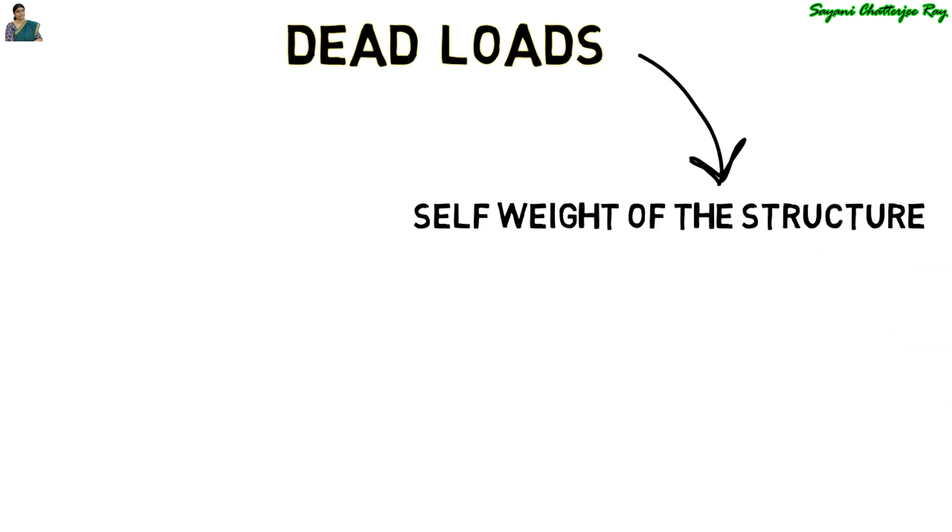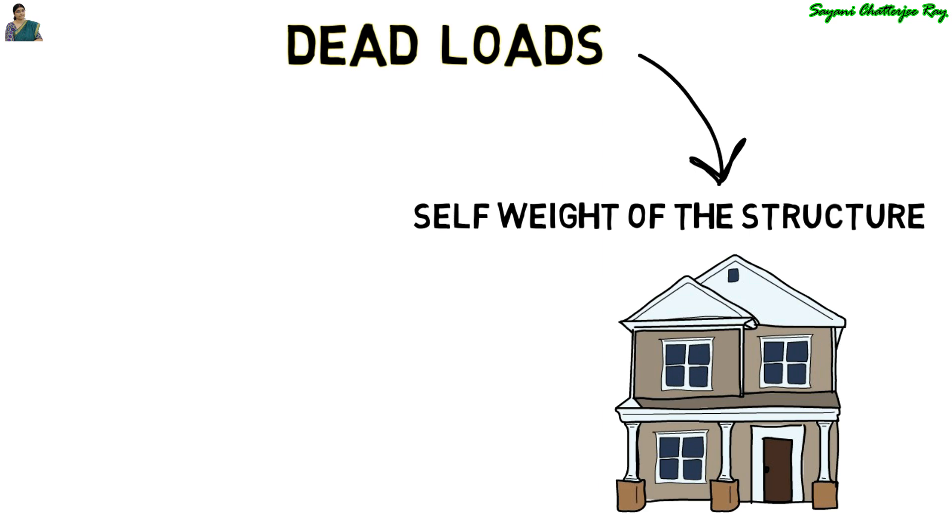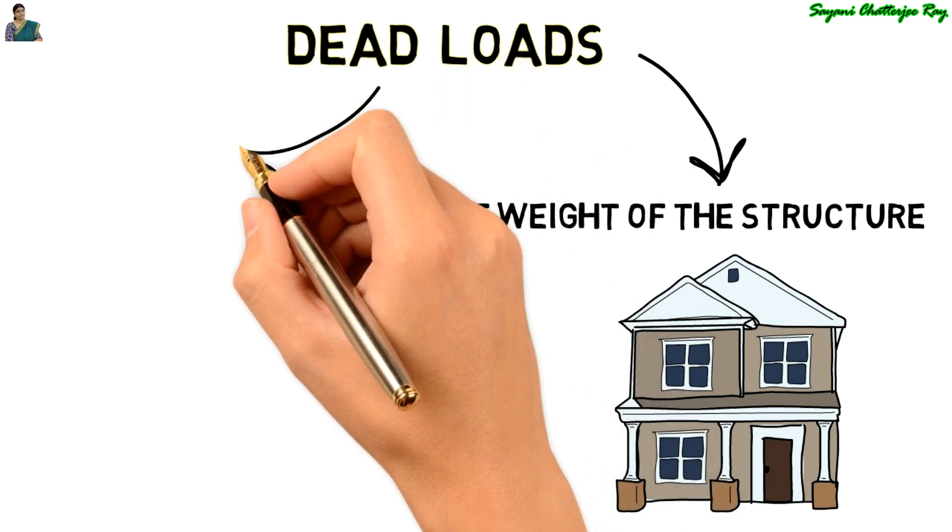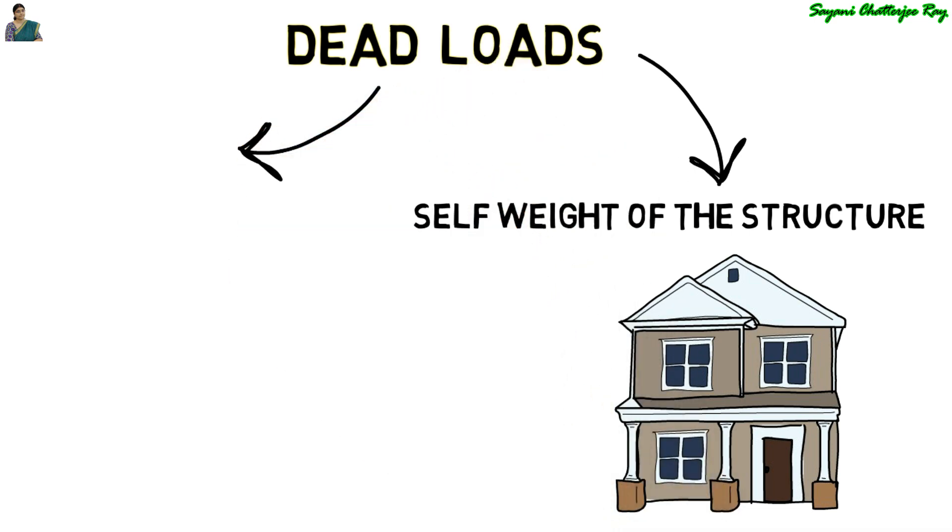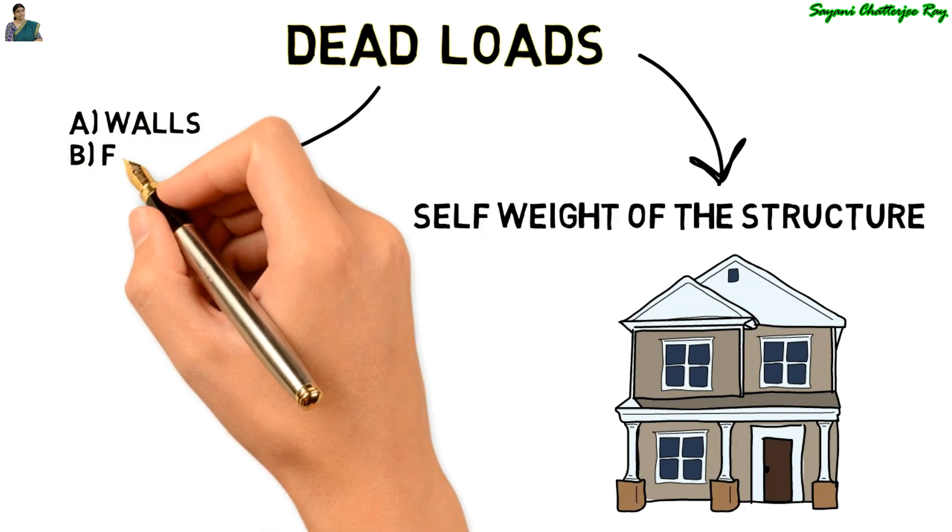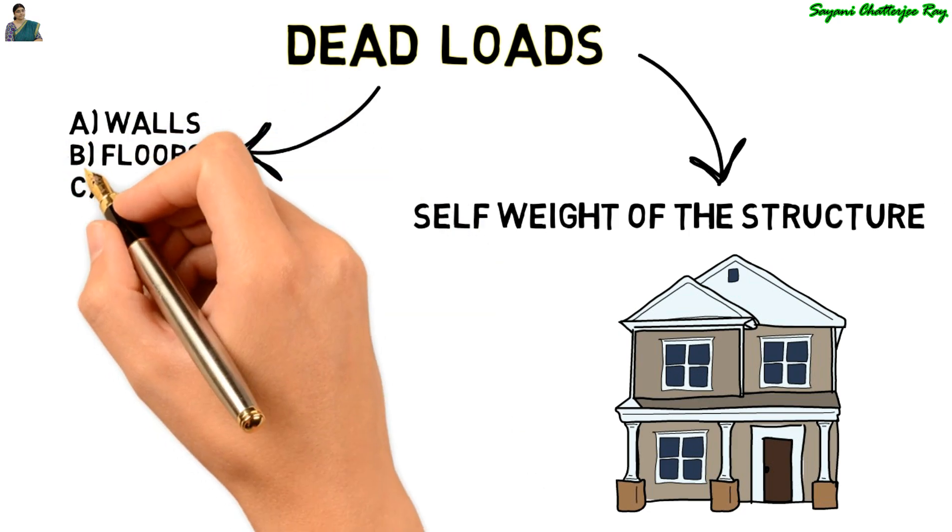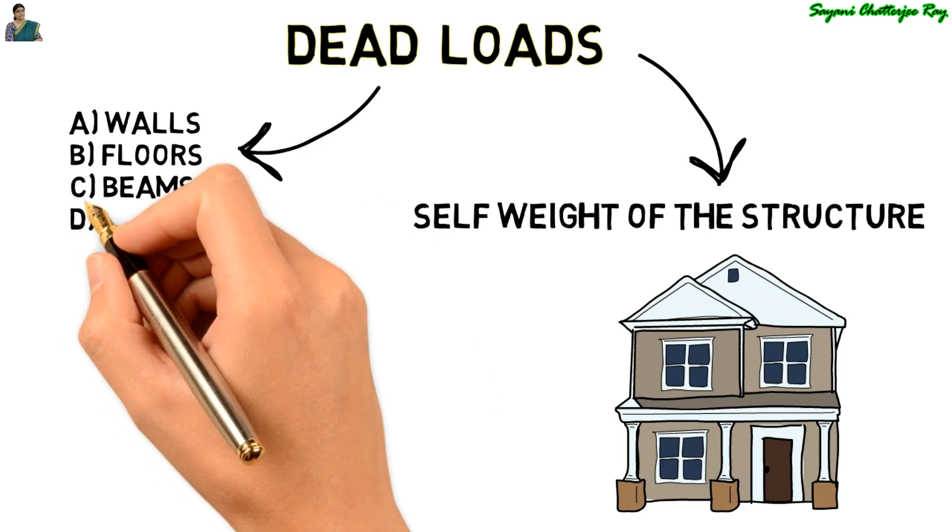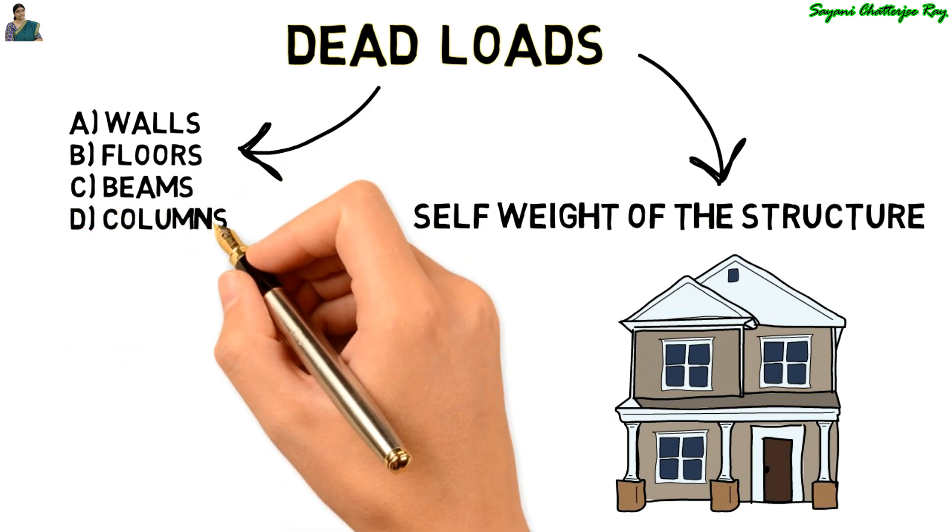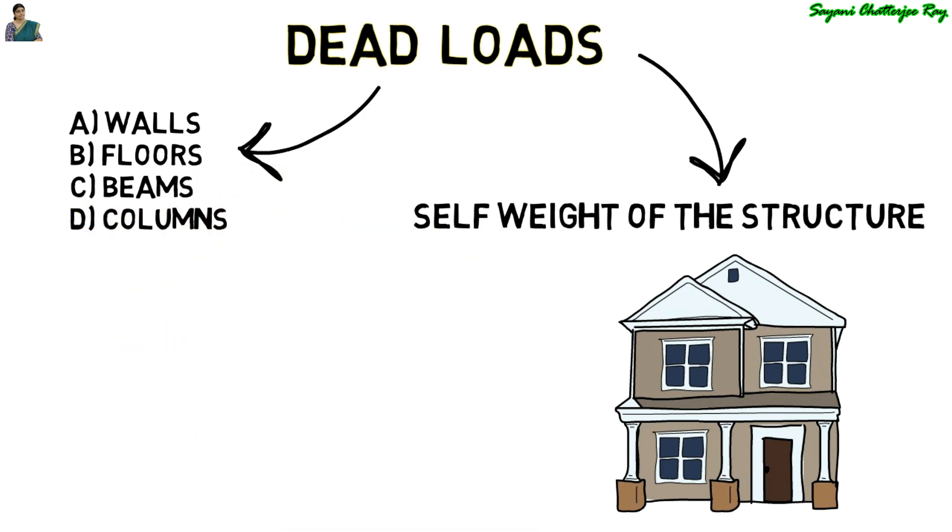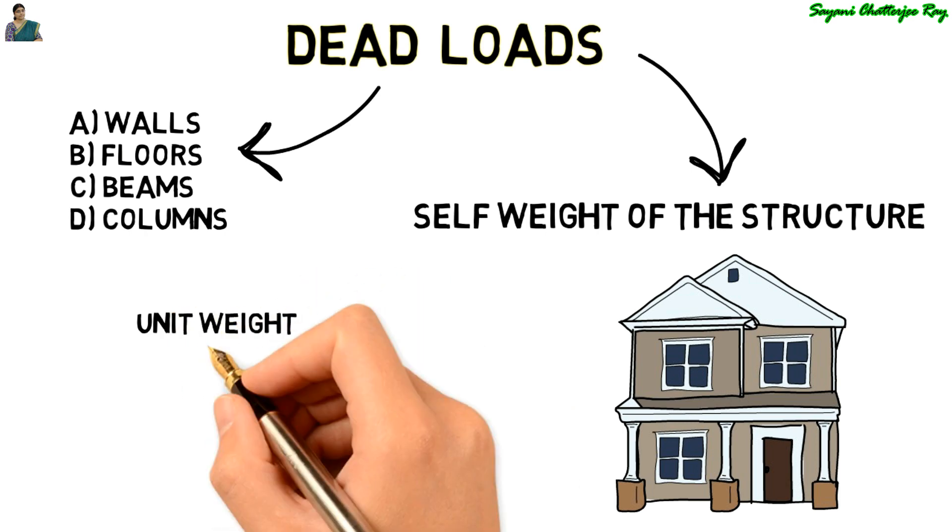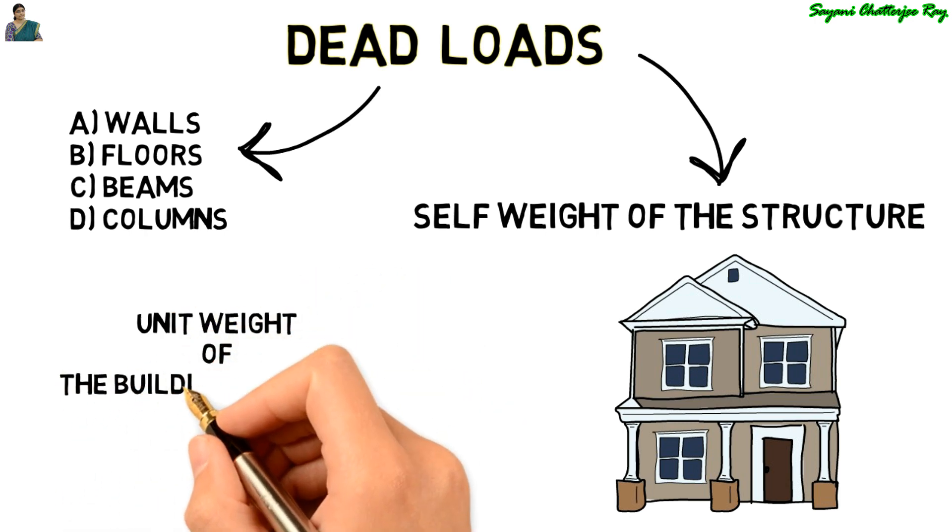Now suppose we are considering a residential building. The dead load includes the self-weight of the walls, the floors, beams, columns, and also some of the permanent fixtures present in the structure. Dead load of any structure depends upon the unit weight of the material.